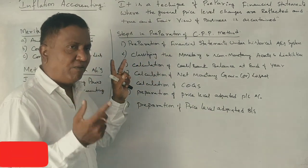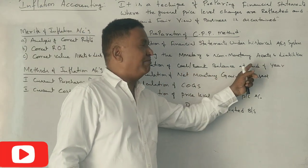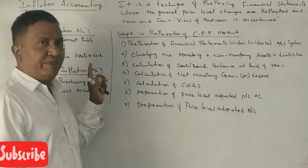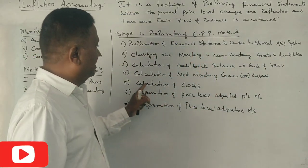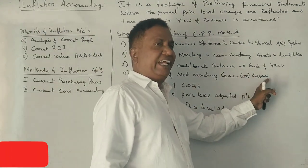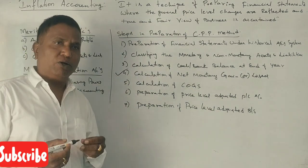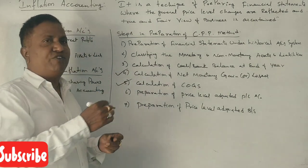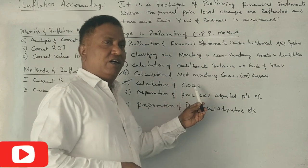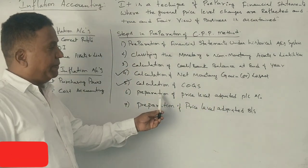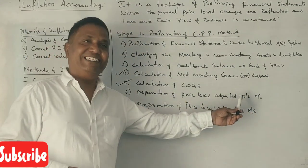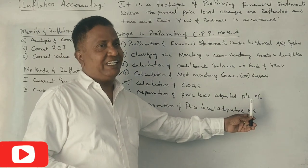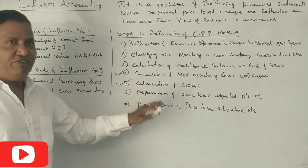The third step is the calculation of cash and bank balance at the end of the year. The fourth step is the calculation of net monetary gain or losses. The fifth step is the calculation of cost of goods sold. The sixth step is the preparation of the price level-adjusted profit and loss account.